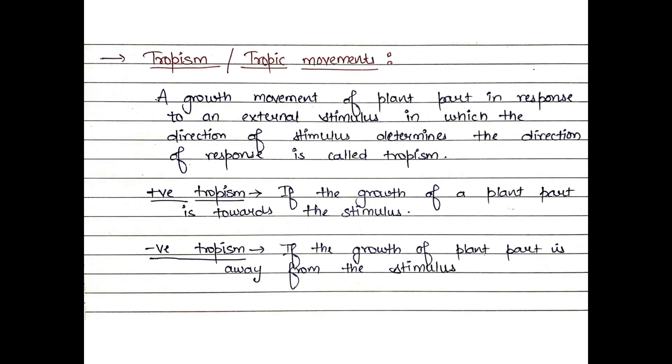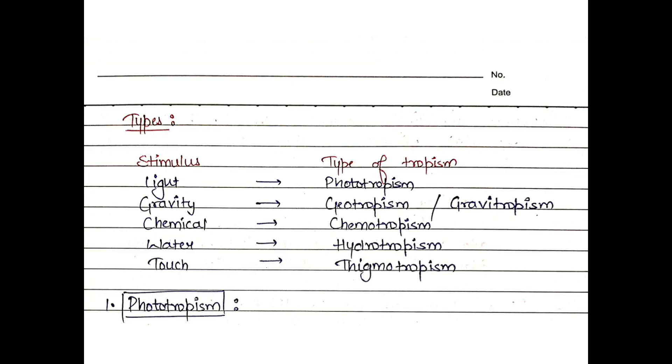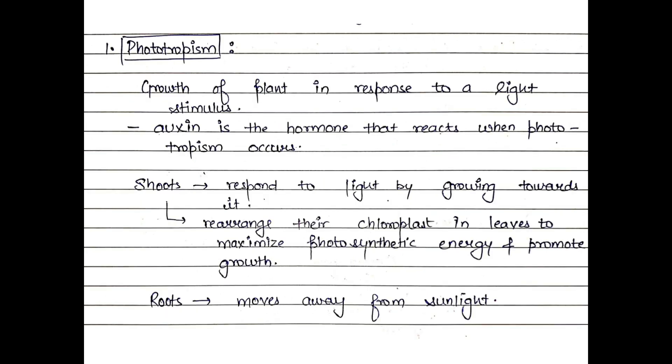In tropism, there are tropic movements. There are many tropisms: Phototropism, Geotropism, Chemotropism, and Thigmotropism. First, we will learn what is positive tropism and negative tropism. Tropism is a growth movement in plant part in response to external stimulus where the direction of stimulus determines the direction of response. Positive tropism is when plant growth is towards the stimulus. Negative tropism is when plant growth is away from the stimulus.